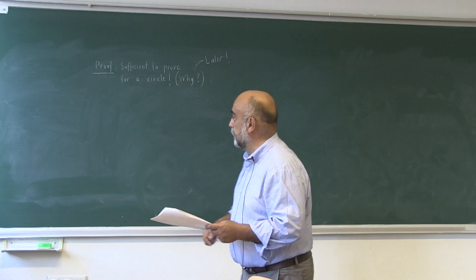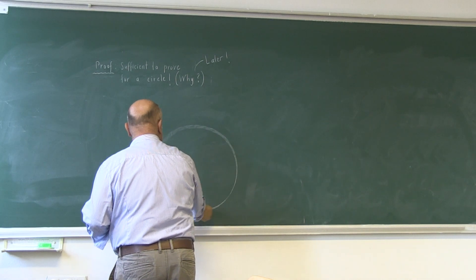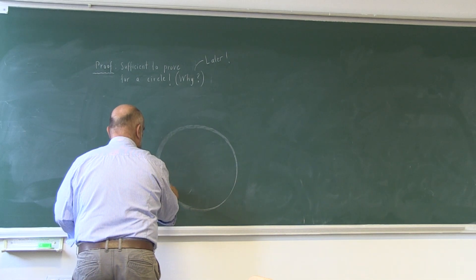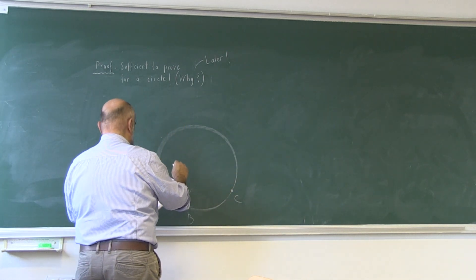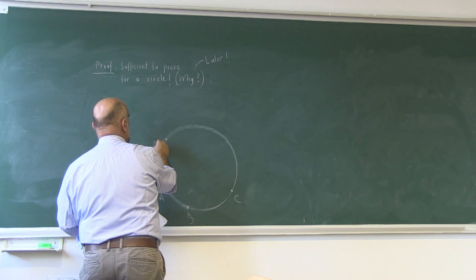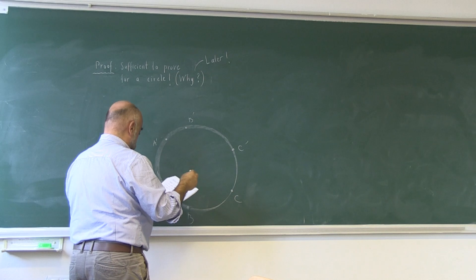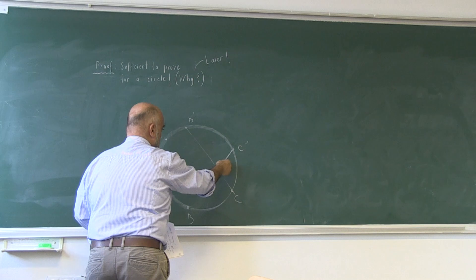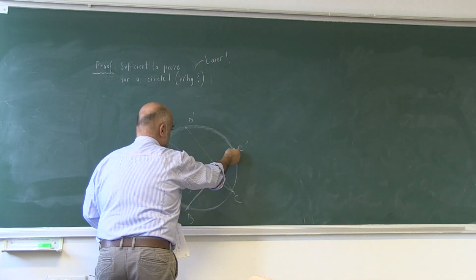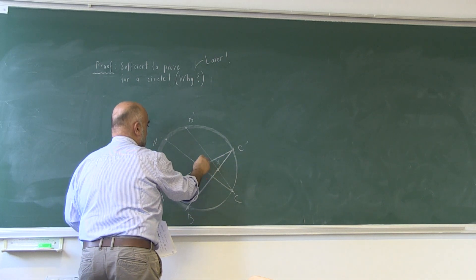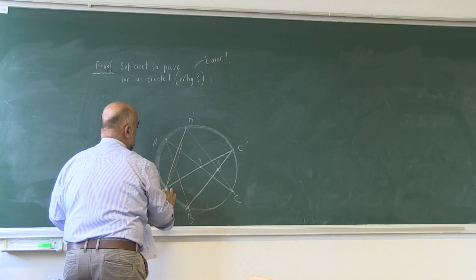So let me do it for the circle. Instead of the conic section, I'm taking a circle. Here are the points A, B, C — and A', B', C'. B'C and B'C' intersect in X; C'A and C'A' intersect in Y; and AB' and A'B' intersect in Z.